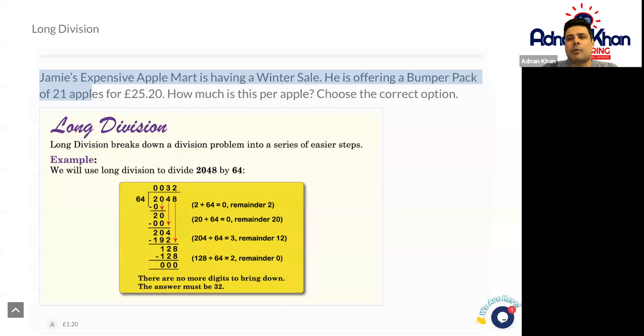So Jamie's expensive Apple Mart is having a winter sale. He's offering a bumper pack of 21 apples for £25.20. How much is this per apple? Okay, so let's start with the first question and show you how this is done.